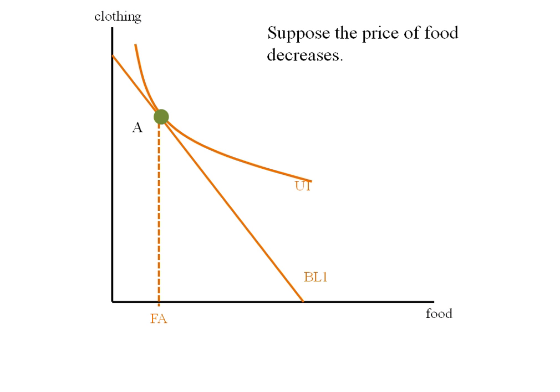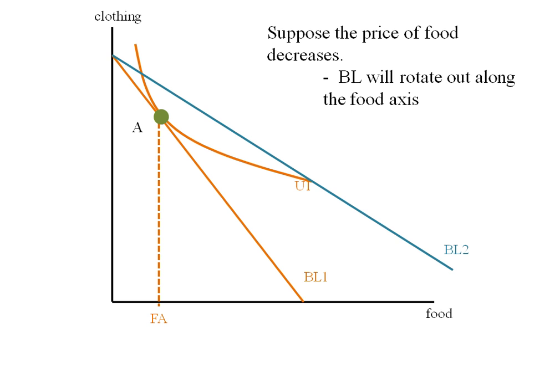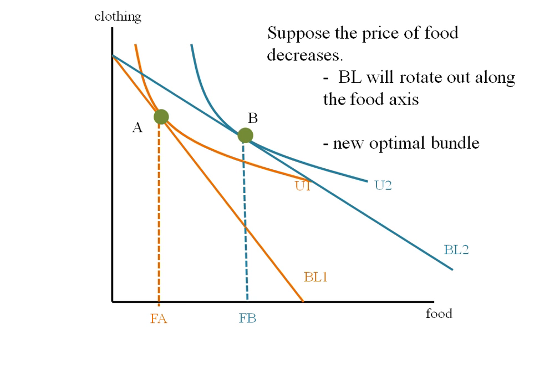Let's let the price of food decrease. We know this is going to give us a new budget line — it's going to be rotated out along the food axis. And because we have a new budget line, we're going to have a new tangency position. In this case, we're on a higher indifference curve. Our new optimal bundle is bundle B, and it contains FB units of food.